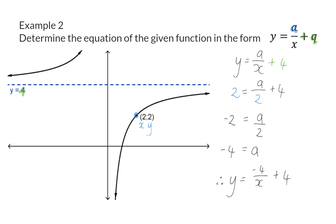So, when determining the equation of a hyperbola, you will always start off determining whether you have the horizontal asymptote, because then you already have the Q value. After that, you can substitute in a coordinate to determine A.